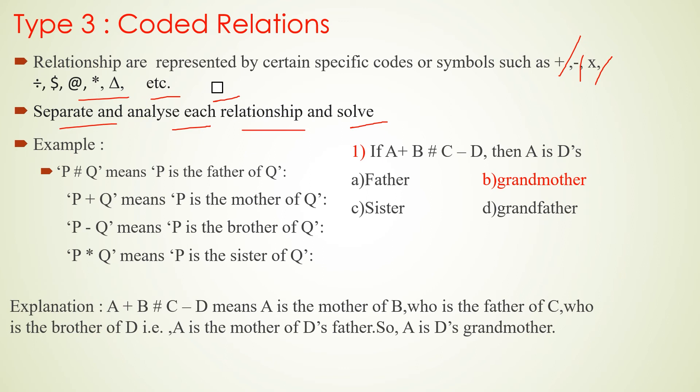For example, the codes are: P slash Q means P is the father of Q; P plus Q means P is the mother of Q; P minus Q means P is the brother of Q; P asterisk Q means P is the sister of Q. The question uses variables A, B, C, D corresponding to P, Q, R, S, T in the code definitions. You identify each coded relation and apply the definitions accordingly.